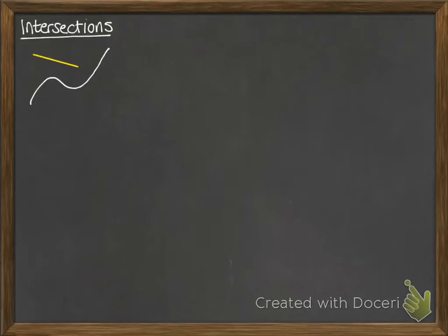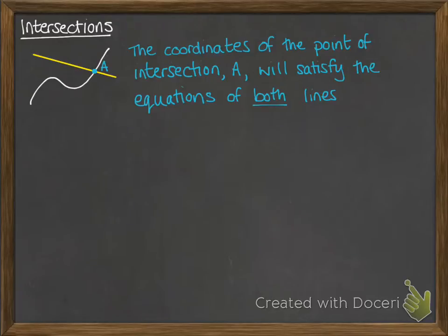Intersections for today. If you have two lines that cross, there will be a point of intersection. This one's been marked as A. The coordinates of the point of intersection at A will satisfy the equation of both of those lines. If you plug X and Y from the coordinates of A into the equation of the line, they'll work on both lines.